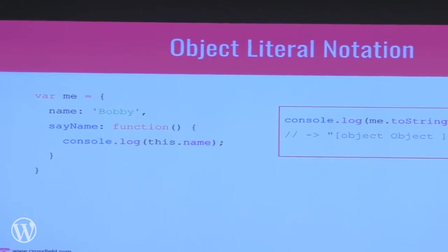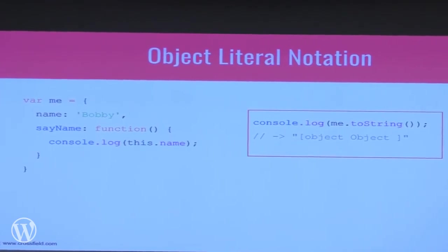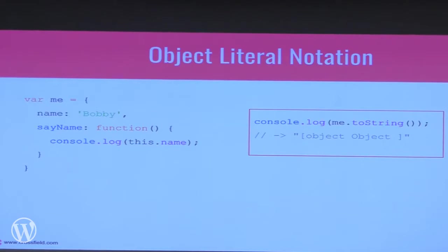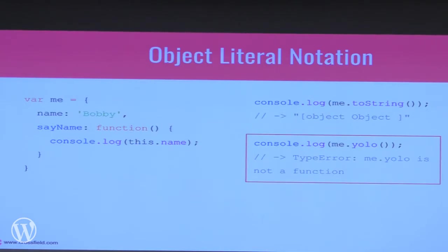If you take that same object and call me.toString(), you actually get output like '[object Object]' — a function I didn't define. This works because when you create an object literal, you inherit all the properties and methods from the core JavaScript Object. You get extra methods for free. But if you call me.yolo(), which doesn't exist, you get a TypeError: 'me.yolo is not a function.' Reading errors carefully tells you exactly what's missing.